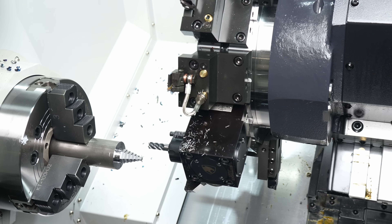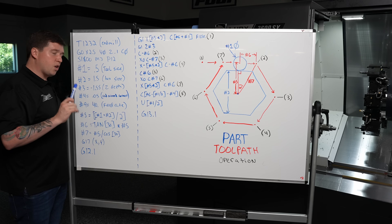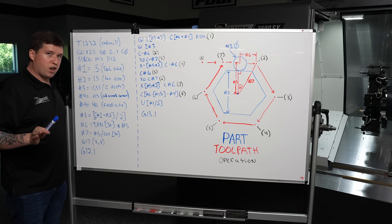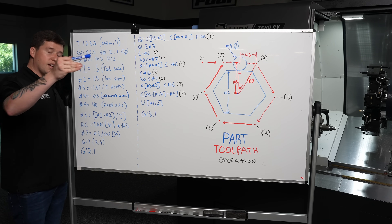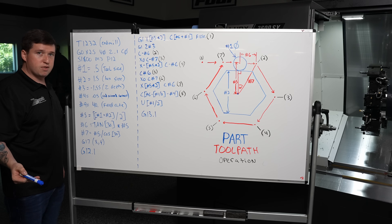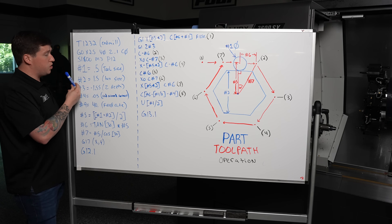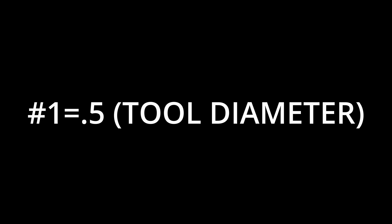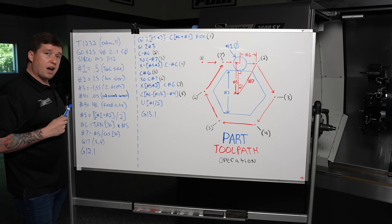Next, I turned on the RPM of my live tool spindle — I went 1800 RPM. That's all basic stuff, but now how do you make the macro work? Copy it from the description, put it into your machine, and then change these next few variables. We're going to start with pound one.